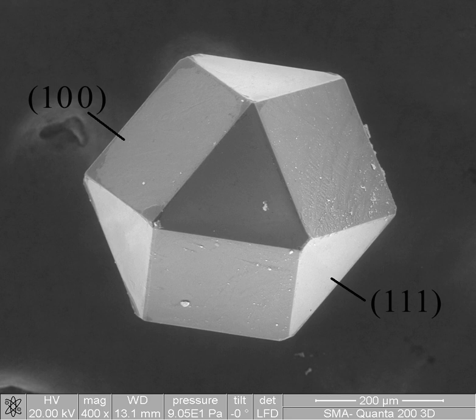Materials science is also an important part of forensic engineering and failure analysis, investigating materials, products, structures or components which fail or do not function as intended, causing personal injury or damage to property. Such investigations are key to understanding, for example, the causes of various aviation accidents and incidents.